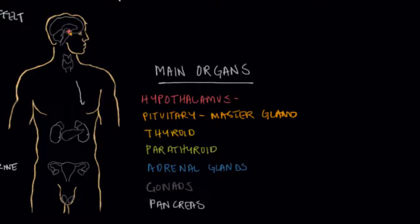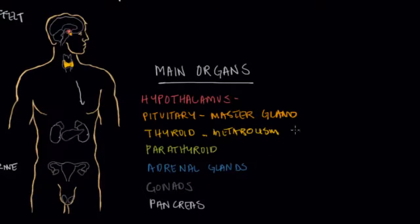The first organ the pituitary stimulates is the thyroid gland, through thyroid stimulating hormone. The thyroid gland wraps around the trachea — your windpipe — and you can feel it when you swallow. Its main role is regulating the body's metabolism, up-regulating or down-regulating the entire body. It does that through the thyroid hormones T3 and T4 — also known as triiodothyronine and thyroxine — which are members of the tyrosine derivatives class mentioned earlier.